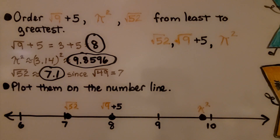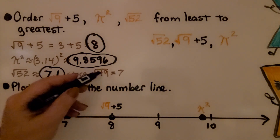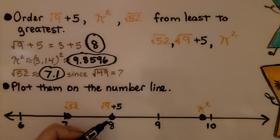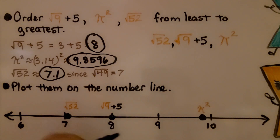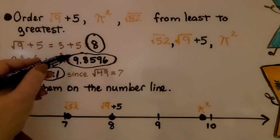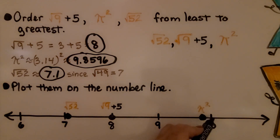Now we can plot them on the number line. The square root of 52 is just a little more than 7 since it's a little more than the square root of 49. The square root of 9 plus 5 is 8. Pi squared is approximately 9.8596, so it's very close to 10. We've been able to plot them on the number line from least to greatest.